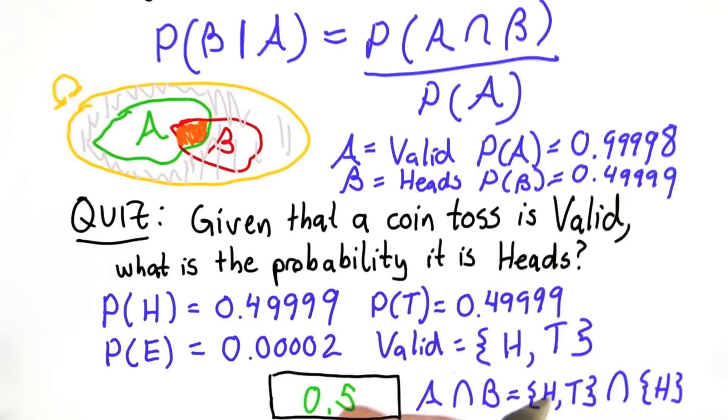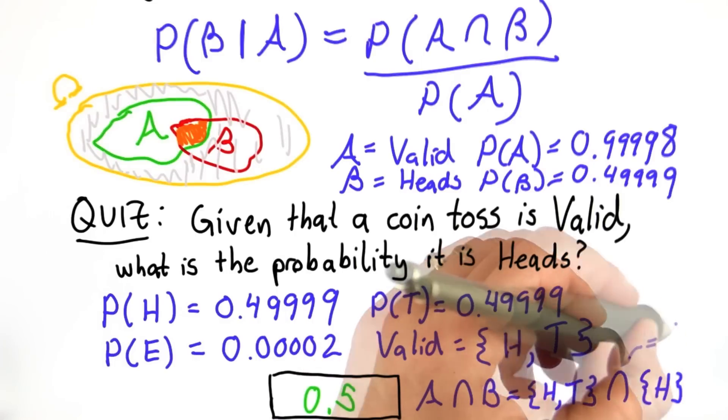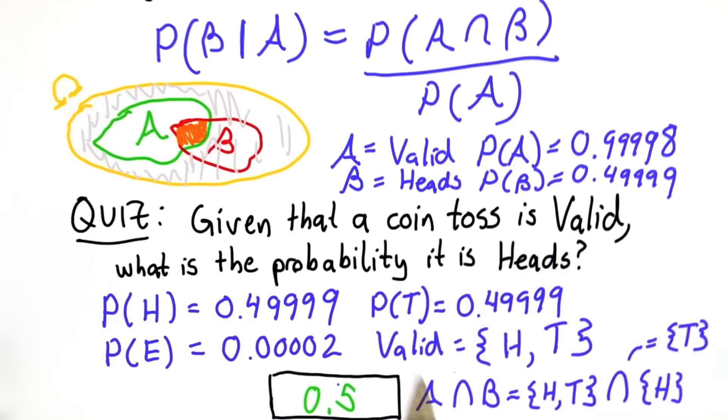So if we intersect heads and tails with heads, well, we get tails. And we know the probability of tails is 0.49999.